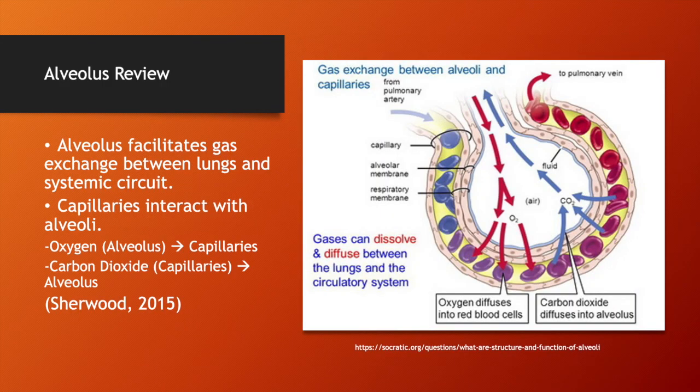First, we will review the structure of the alveolus and its function. The alveolus facilitates gas exchange between the lungs and the systemic circuit of the body. There are capillaries which surround the alveolus and gas exchange occurs through diffusion. The oxygen in the alveolus from inspired air travels to the capillaries, and carbon dioxide from the capillaries diffuses into the alveolus and is expired.